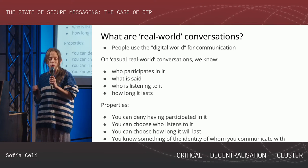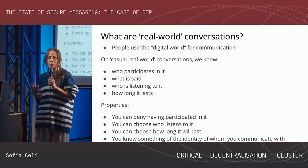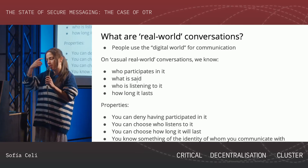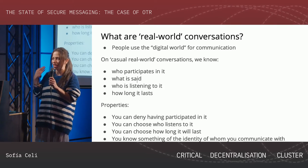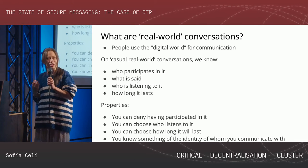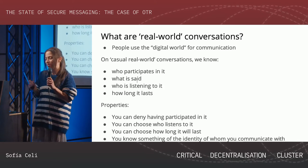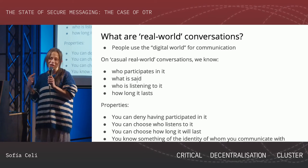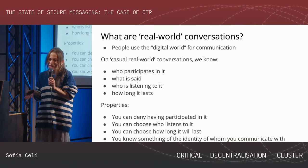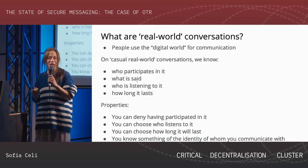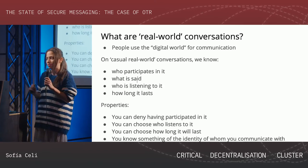So the first people thinking about how to make casual communication secure started by mapping what properties we have in real-world physical conversations. In real-world communications, we know who participates because we see the other person face-to-face or hear their voice. We know what is said because we're in the conversation. We know who's listening because unless someone physically chimes in, we'd notice. And we know how long it lasts — it's not recorded, and it stops the minute you say goodbye.